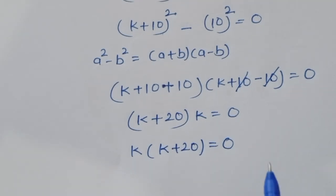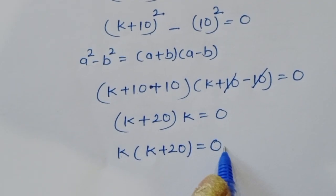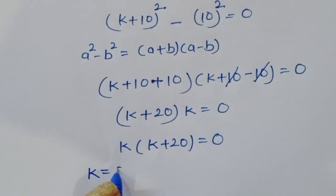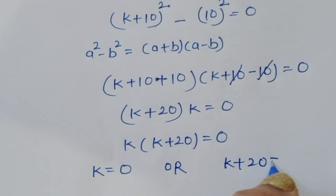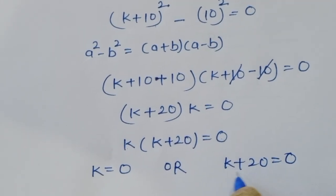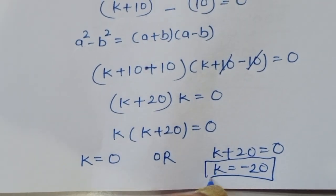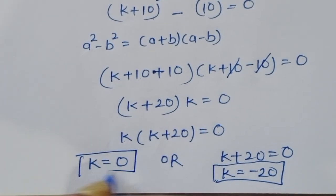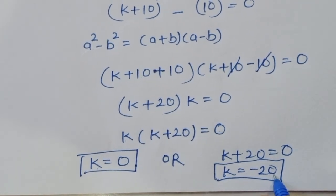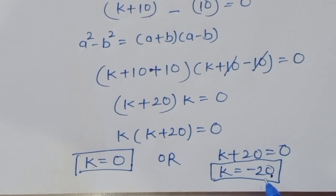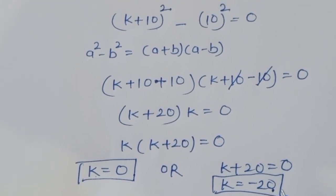From (k)(k + 20) = 0, we get two equations: k = 0, or k + 20 = 0, giving k = -20. In the second method we also get the same values: k = 0 and k = -20.